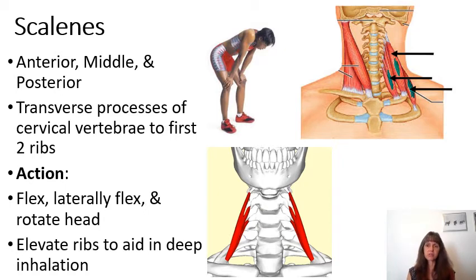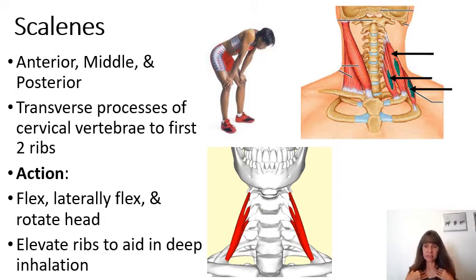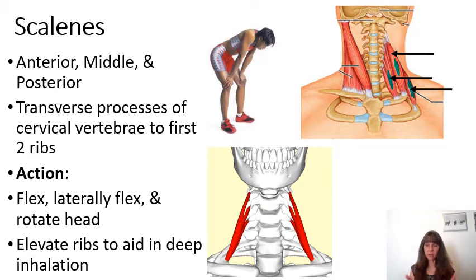This is one of those muscle groups where, if the neck is fixed in position, they can be used as accessory muscles to elevate the first two ribs during deep inhalation. If somebody is really trying to pull air in, you can actually feel those two ribs move upward. This is a circumstance where origins and insertions can change depending upon which body part is fixed.